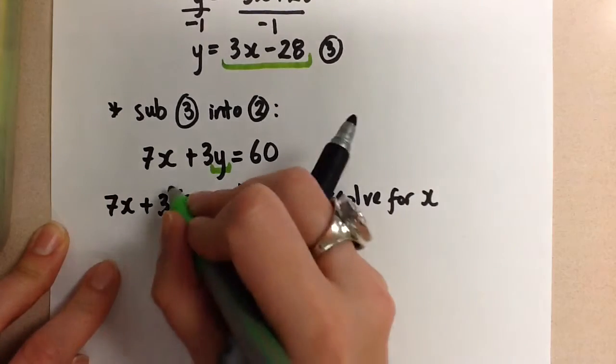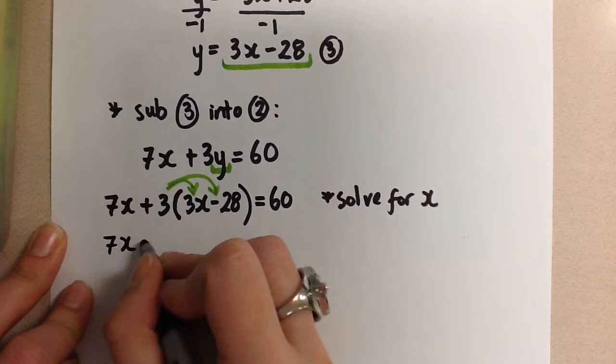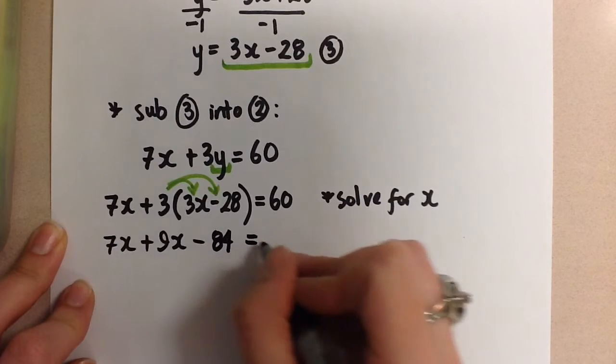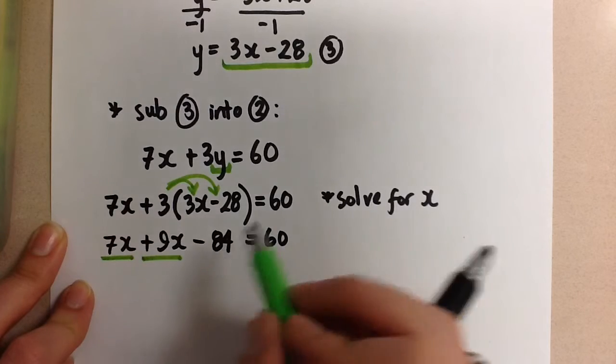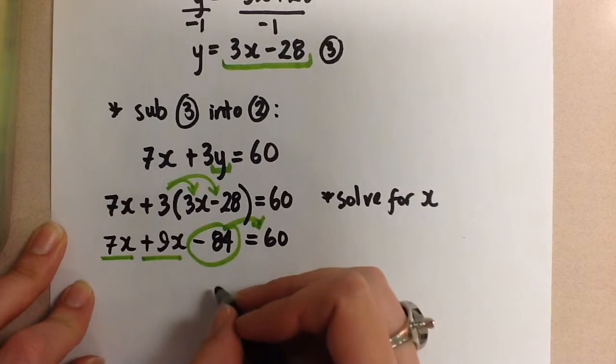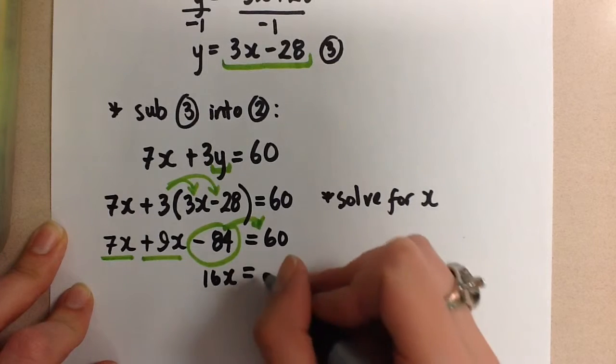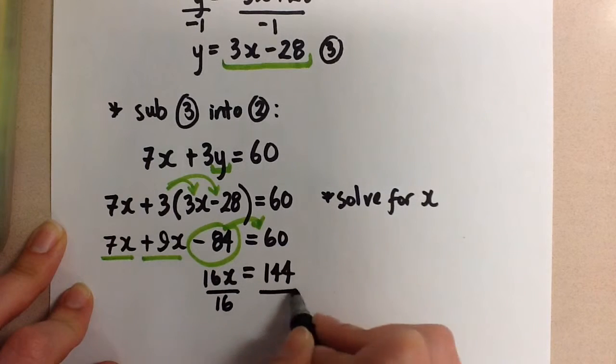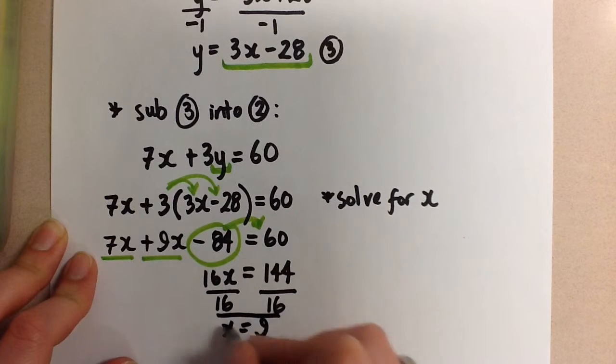So I'm going to distribute first, so that I can simplify this side. And we get 7x plus 9x minus 84 equals 60. Now these are like terms, so I can combine these two together. And I'm going to take this minus 84 and bring it to the other side to join with that 60. So on the left-hand side, I'm left with 16x, and on the right-hand side, 60 plus 84 gives us 144. To get the x by itself, we know we divide by its coefficient of 16, and I get x equals 9.